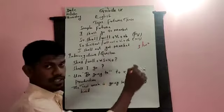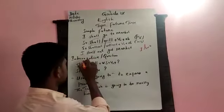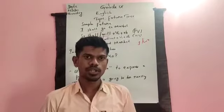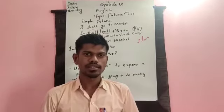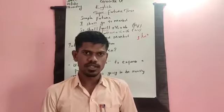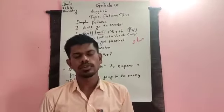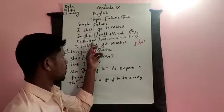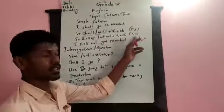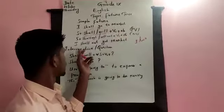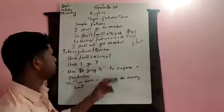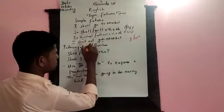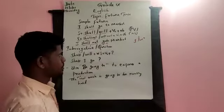Now, how do we make the same sentence negative? This is also very important. As I have been telling you in class, you are supposed to add 'not' immediately after the auxiliary. For example: I am not, he is not, they are not, I have not, I was not, they were not. The same applies here — you add 'not' immediately after shall or will. For example: 'I shall not' or 'will not' + V1 + object. Example: 'I shall not go to market.'